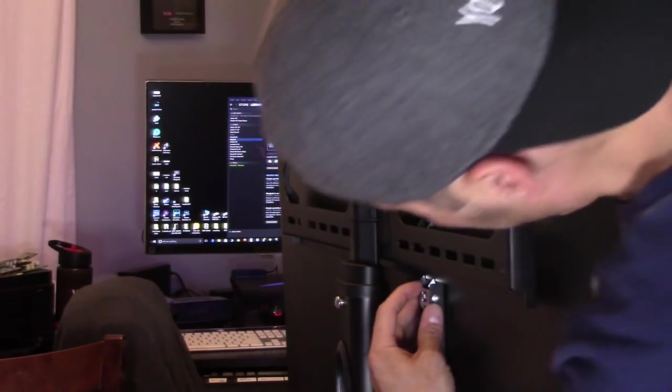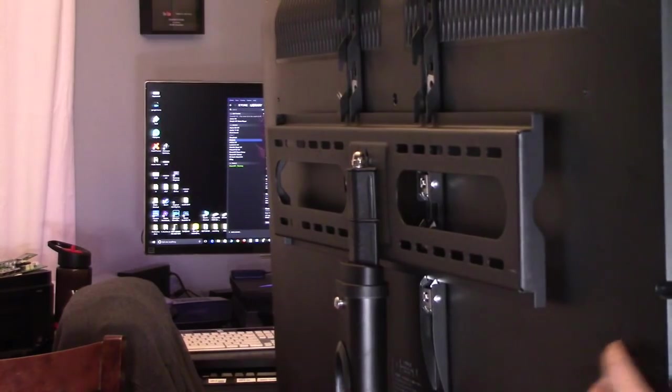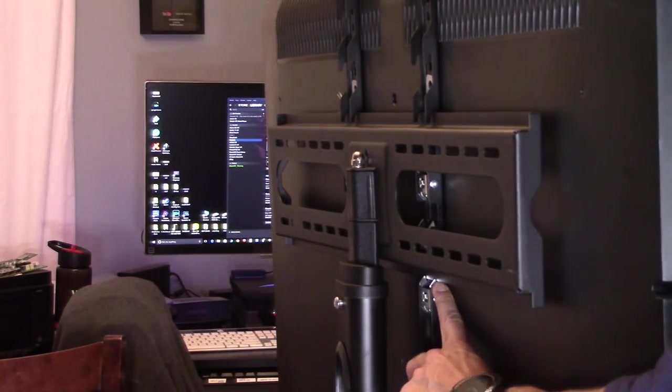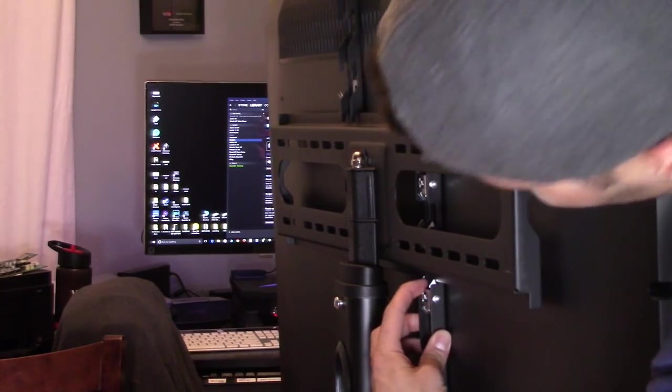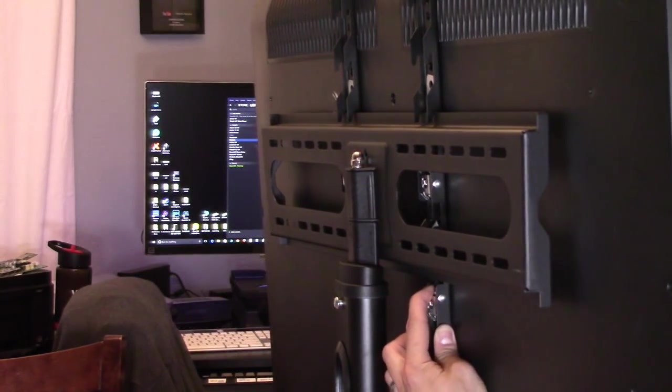There you go. Now, as you can see, it snaps right in. So, you don't have to worry about the TV falling off the mount because it's actually locked in. Anytime you want to remove it, you have to pull down and then you can remove it from the mount.